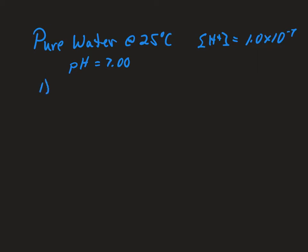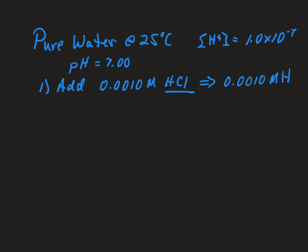What happens if we add 0.001 molar hydrochloric acid to that solution? Well, hydrochloric acid is a strong acid, so it will dissociate completely. After it dissociates, we get 0.0010 molar hydrogen ions, which overwhelms the few hydrogen ions we had in the first place. So the pH would be 3, and by adding that, we went from 7 down to 3 — a change of 4 pH units.